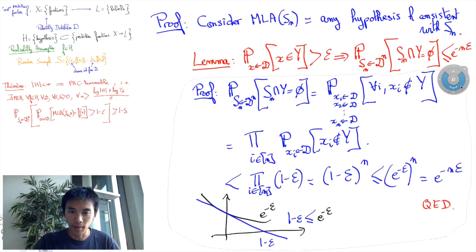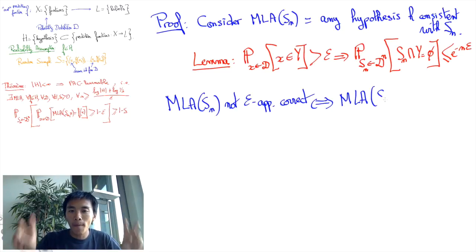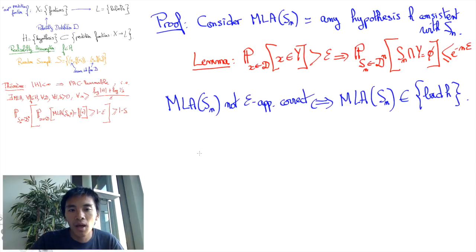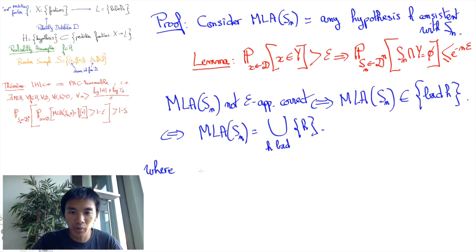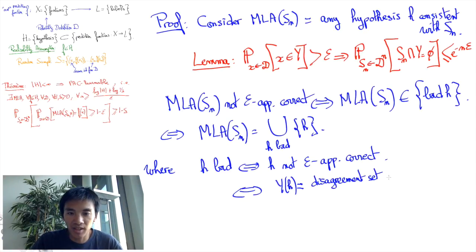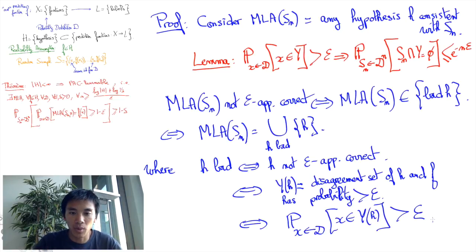Let's now go back to the theorem. The trick now is to take a huge union bound over all bad hypotheses, that is, hypotheses that are not epsilon-approximately correct with respect to the real underlying prediction function f. By definition of approximated correctness, any such hypothesis is associated to a disagreement set with f equal to Y, which has probability greater than epsilon.